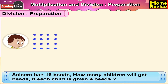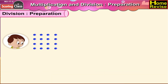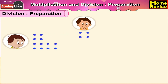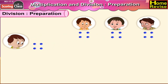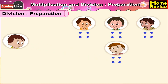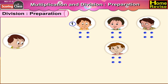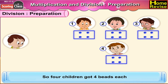Salim has sixteen beads. How many children will get the beads if each child is given four beads? Salim has sixteen beads. He gives four beads to the first, four to the second child, four to the third child, and last remaining four to the fourth child. Now, all the beads are distributed among the children. Let us see the total number of children. One, two, three, four. So, four children got four beads each.